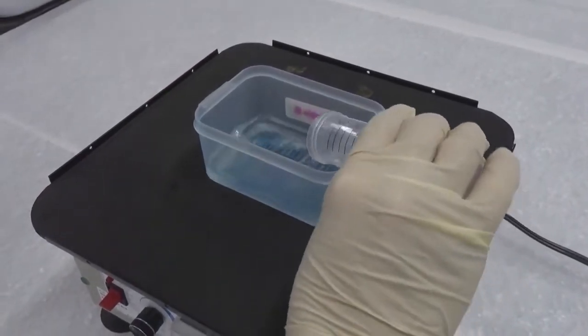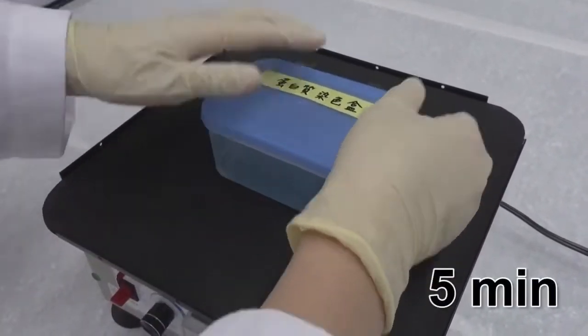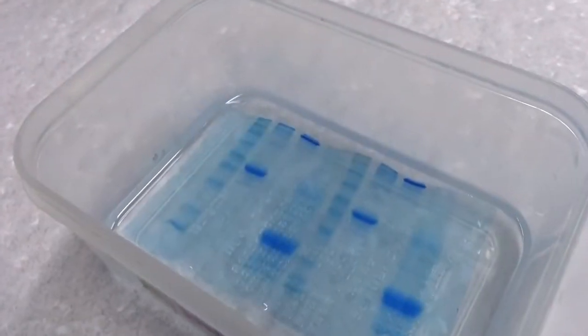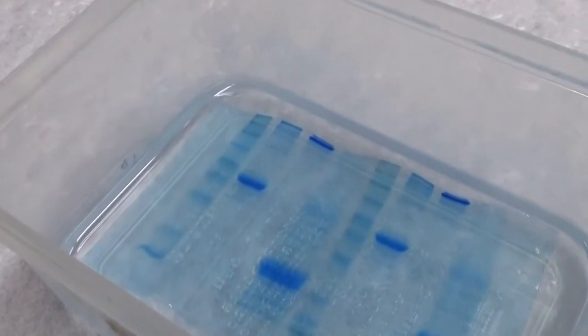Finally, add 25 ml deionized water to wash the gel with shaking for 5 minutes. By now, you can see blue protein bands appear in the gel.